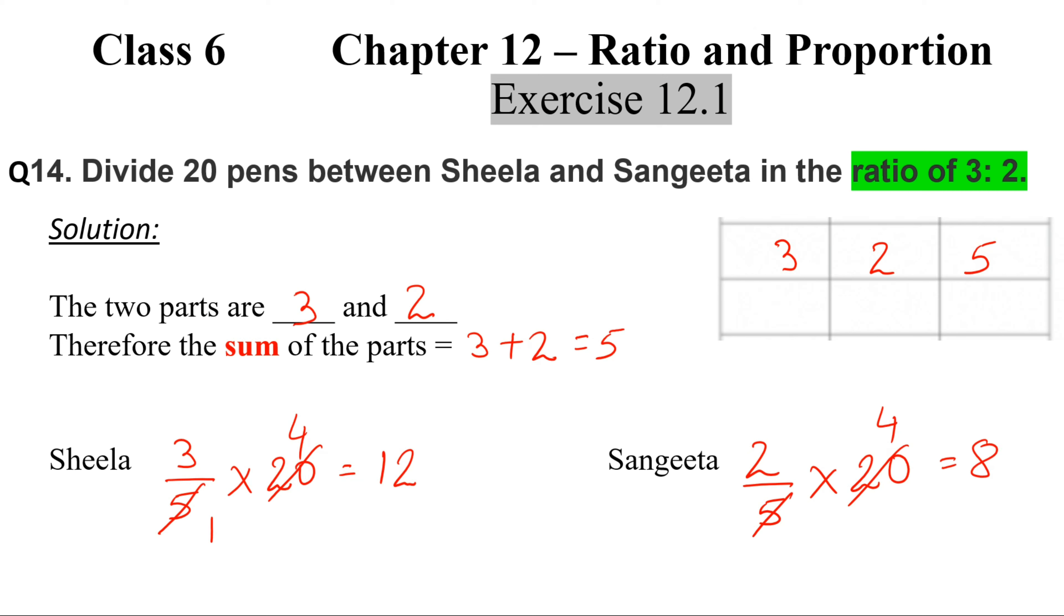Now see, if I put these numbers here, 12 and 8, then 12 + 8 gives you 20. So basically these are equivalent fractions. Therefore, our solution is Sheela gets 12 pens and Sangeeta gets 8 pens.